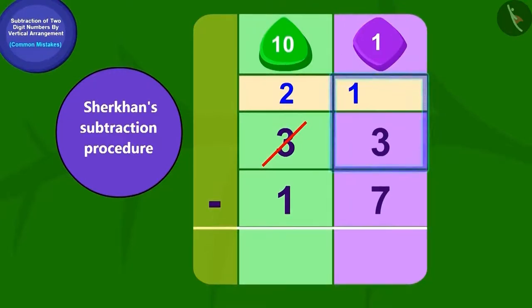Now how many ones do we have? Thirteen ones. Now this is very easy. If we remove seven ones out of thirteen ones, then we have six ones left.